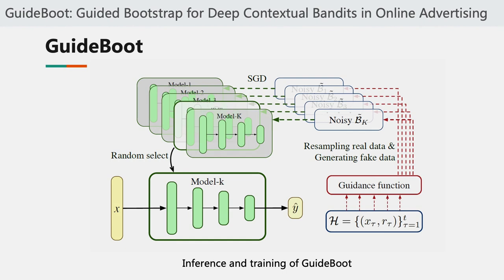In this figure, we show the inference and training procedure of GuideBoost. The solid lines are feedforward passes for inference. We have K models, and for each query, we randomly choose one model out of the K models to make the prediction. The dashed lines are for training, which includes a data generation process for each model, where the probability of generating a fake sample is determined by the guidance function.